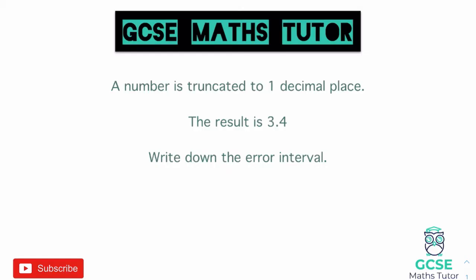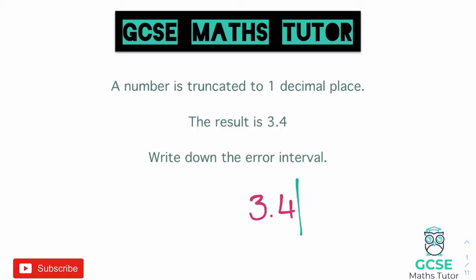Looking at our first question: a number is truncated to one decimal place and the result is 3.4 — write down the error interval. When we're looking at truncation, that essentially means that the number has just been chopped off. For example, if I write down a number that could be truncated to 3.4, I could write down 3.456. If I truncate that to one decimal place, we chop it after the first decimal and whatever's at the end disappears — we just get rid of it. So we've got 3.4.